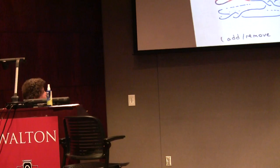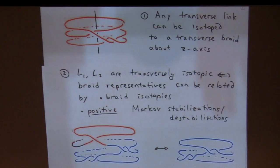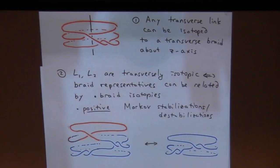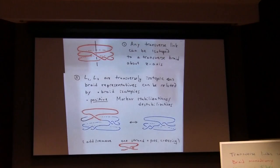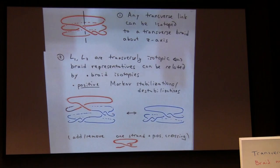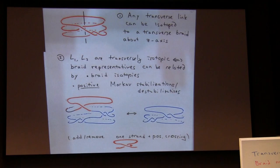More precisely, what we need is two things. First, every transverse link can be isotoped into a transverse braid around the z-axis. And if two links are transversely isotopic, you can show that braid representatives can be related by braid isotopies and what's called positive Markov stabilizations and destabilizations — you essentially add an extra strand and a positive crossing.